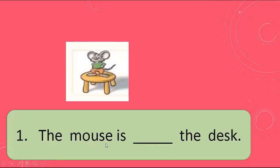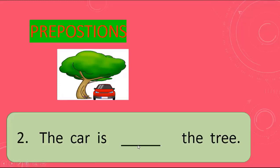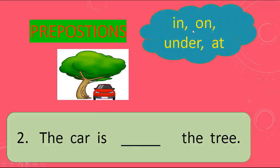Number one: the mouse is blank the desk. Look, is the mouse in, on, under, or at? You're right. The mouse is on the desk. Number two: this car is blank the tree. The car is under the tree.